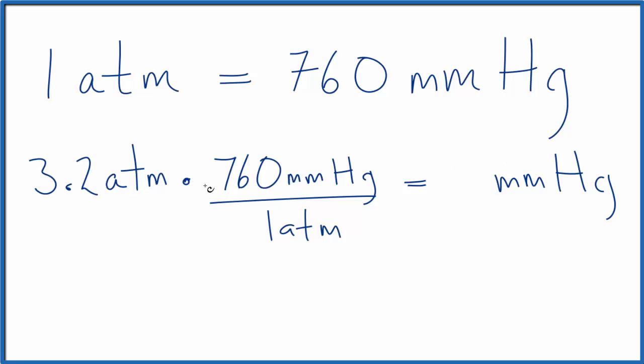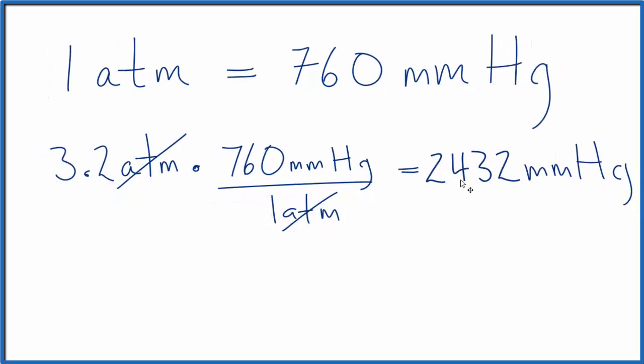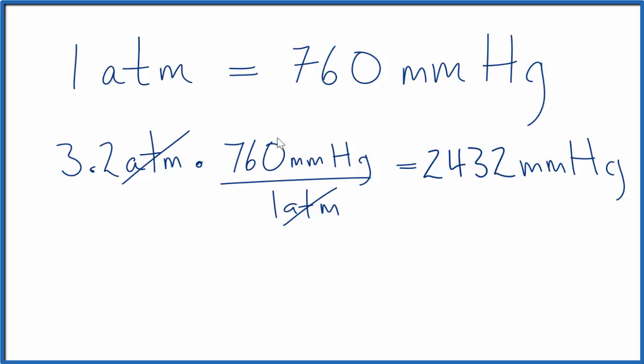Atmospheres will be on the top and the bottom, they'll cancel out, leaving millimeters of mercury. So we know we're doing it right. We do the multiplication and we get 2,432 millimeters of mercury in 3.2 atmospheres. So we were pretty close to our estimate.